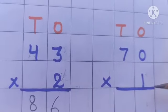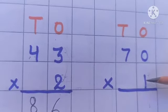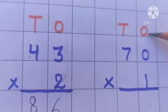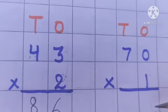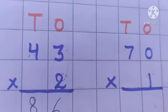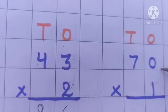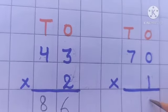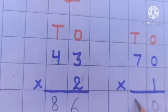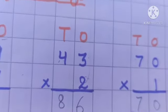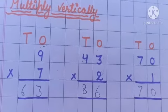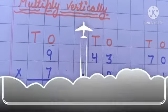Look here. First we multiply 1 with the number at the ones place, then with the number at the tens place. One times zero is 0, and one times seven is 7. In this way we can solve multiplication vertically as well as horizontally.